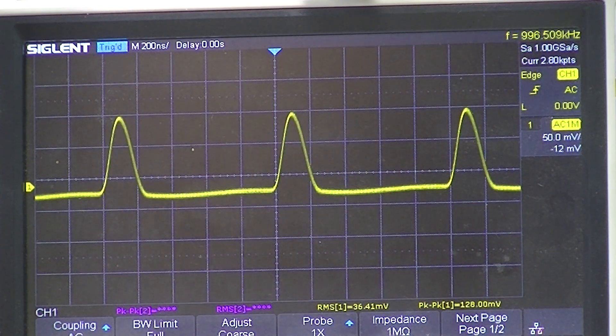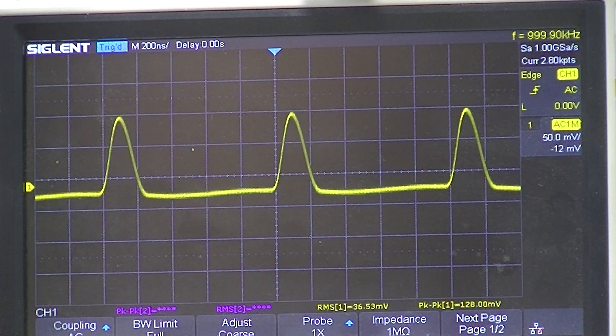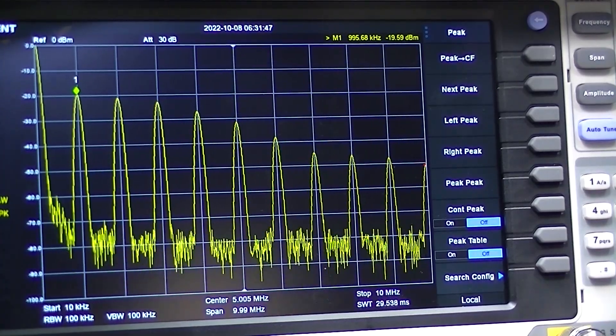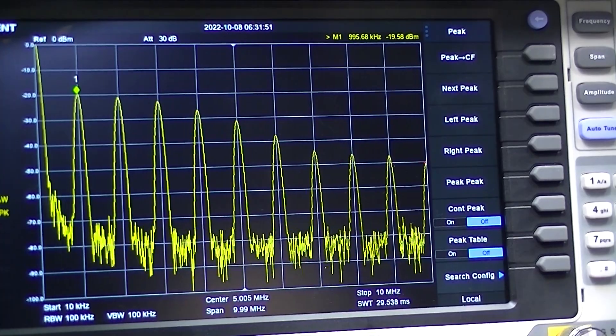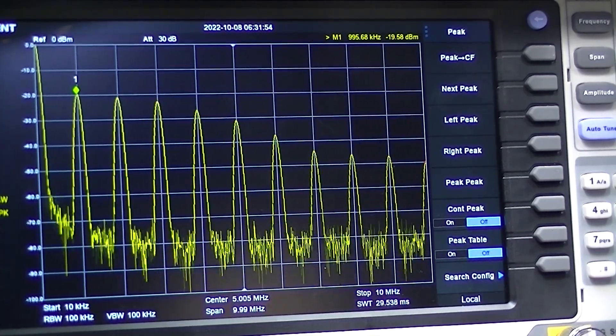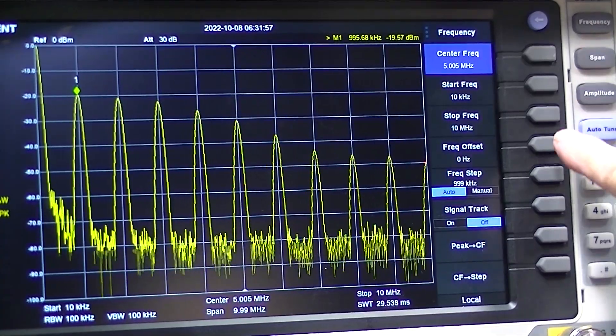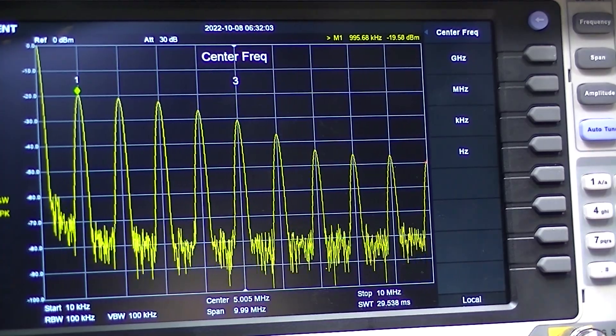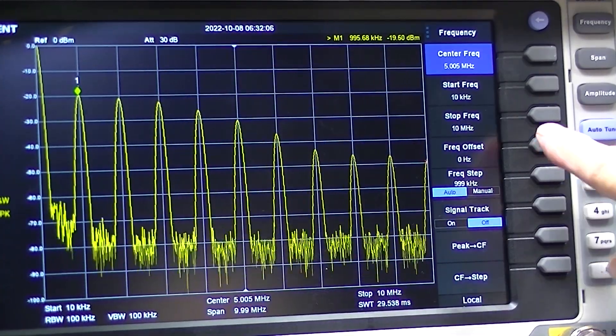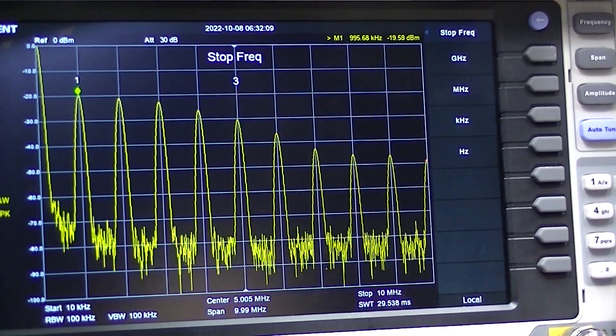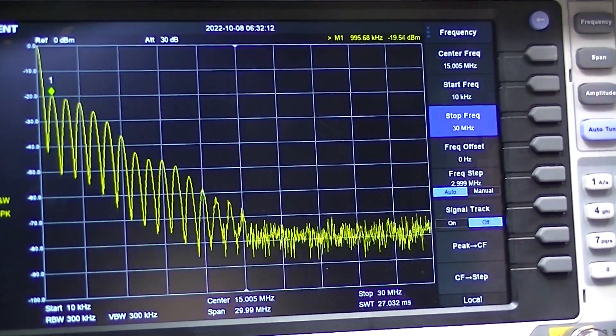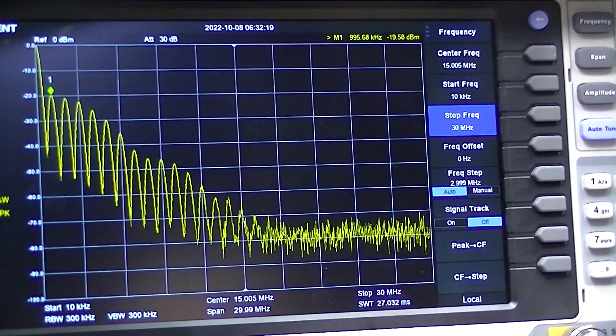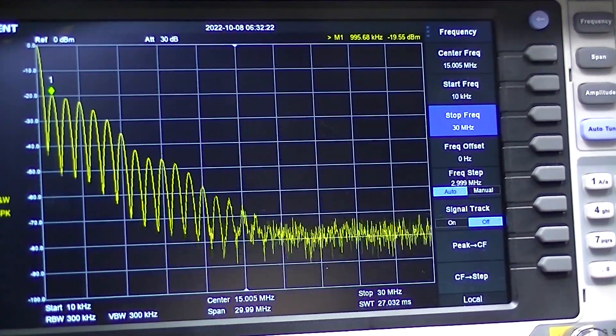It does indicate ninety nine point nine kilohertz. Spectrum analyzer says ninety nine point six, certainly rich in harmonics on the spectrum analyzer. See it's stop frequency is 10, let's go to 30. You can see we have harmonics clear up to 15 megahertz at least, which is the center frequency.